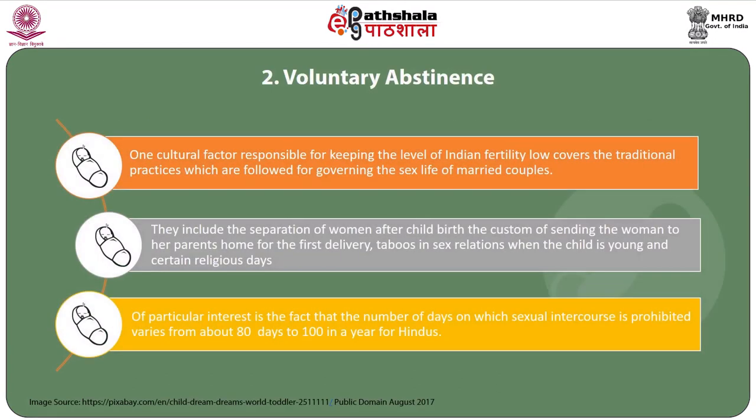Voluntary abstinence: one cultural factor responsible for keeping the level of Indian fertility low covers the traditional practices followed for governing the sex life of married couples. These include the separation of women after childbirth, the custom of sending the woman to her parents' home for the first delivery, taboos on sex relations when the child is young, and certain religious days. Of particular interest is the fact that the number of days on which sexual intercourse is prohibited varies from about 80 to 100 days in a year for Hindus.